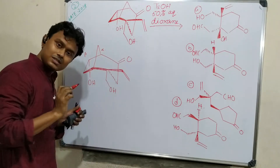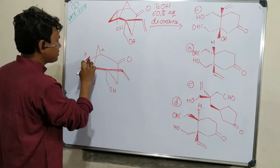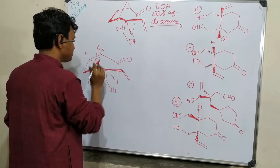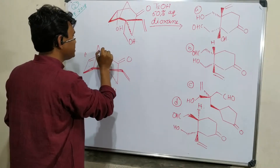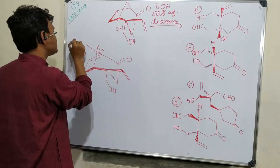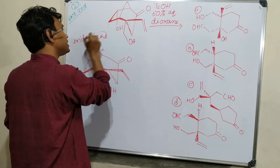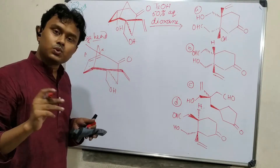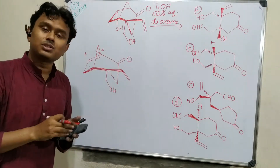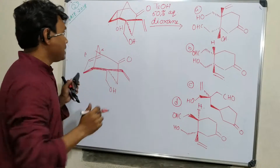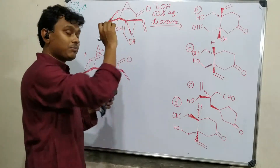This is alpha, this is beta, this is the beta-hydroxy. If this undergoes dehydration, what will be produced? It will produce a double bond here — and this position is a bridgehead. We know bridgehead double bonds are very unstable due to excessive strain. So it will not produce that. Under this condition, retro-aldol product will be produced, so no dehydration will occur.